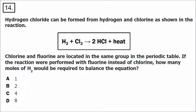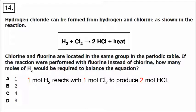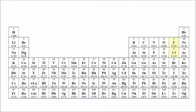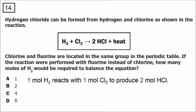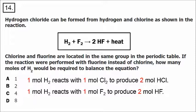Number 14 shows a balanced equation for the formation of HCl. Hydrogen chloride can be formed from H2 and Cl2. Chlorine and fluorine are in the same group — both halogens. If the reaction were performed with fluorine instead of chlorine, the equation looks exactly the same: H2 plus F2 produces two moles of HF. The question asks how many moles of H2 would be required to balance the equation. It's still the same number as before, which is 1.